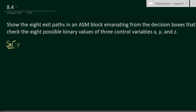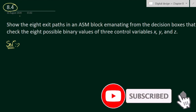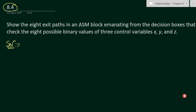Dear students, in this video we will solve problem number 8.4 from chapter number eight. The problem involves eight exit paths in an ASM block emanating from decision boxes that check the eight possible binary values of three control variables X, Y, and Z.